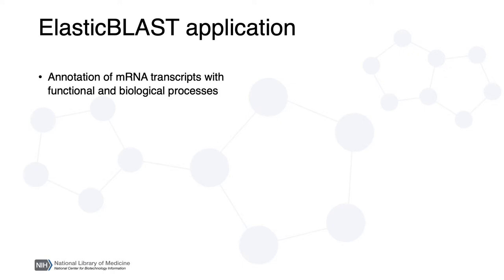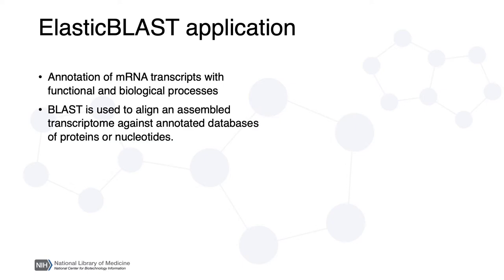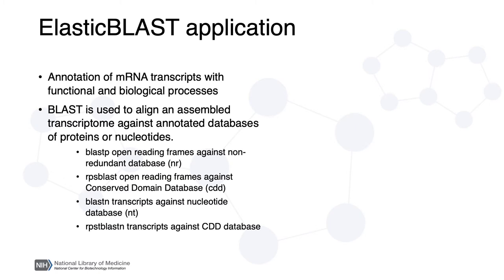This process typically involves the integration of multiple biological databases and software tools. BLAST is used to align and assemble a transcriptome against annotated databases of proteins or nucleotides. These alignments are the first step to identifying close and/or distant homologous genes, proteins, and functional domains to generate new annotations on the newly assembled transcriptome.